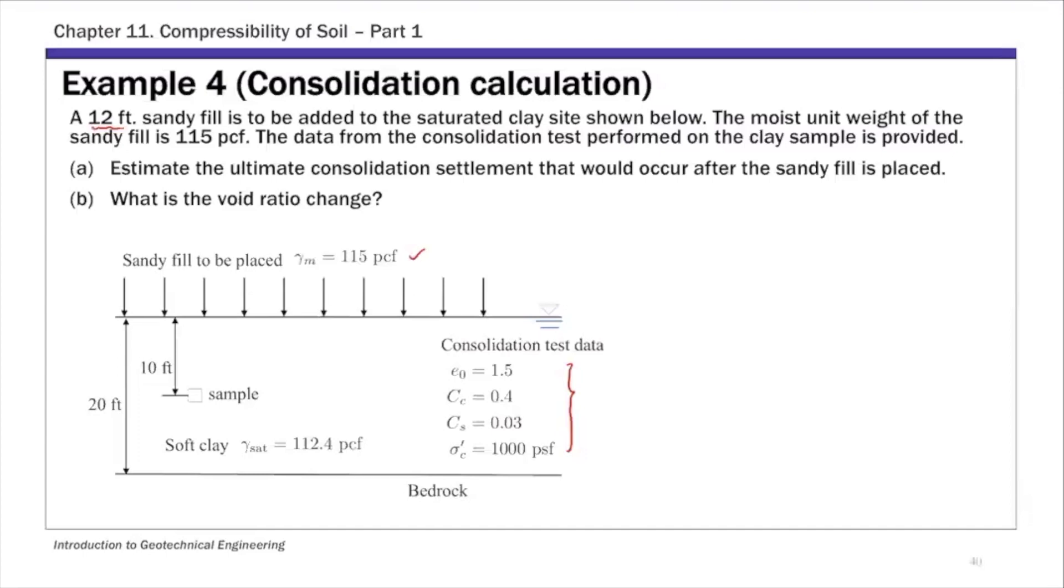For part one, just as the previous two examples, we're going to estimate the consolidation settlement after sandy fill is put on top, but also the void ratio change. This void ratio change is the delta E in your settlement calculation. That delta E is basically used in consolidation settlement calculation. We can use H naught here.